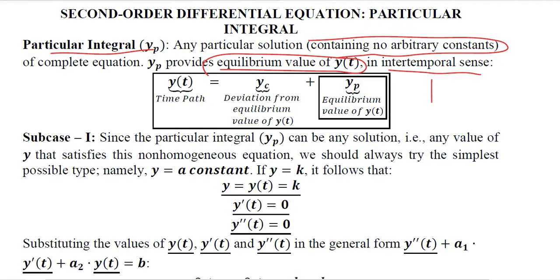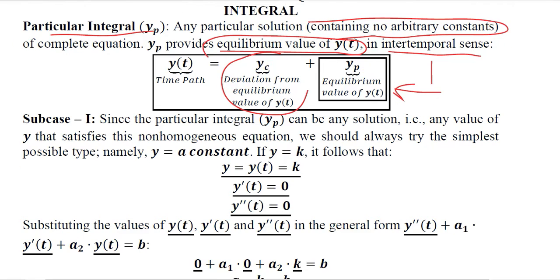Yp is actually the equilibrium, as we already learned in the first order differential equations. Yc represents the deviation from the equilibrium, and both combined give us the time path. There are multiple cases in the second order differential equation for the particular integral, and they are based upon the values of a1, a2, and b.